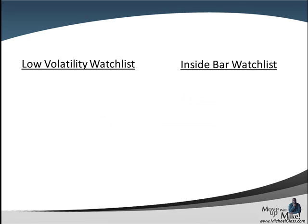As we look at our watch list, we do have a couple of candidates for our low volatility list. We're going to look at the pound dollar, which is not fully there but it's setting up, and the Aussie dollar is there. This is our one-hour timeframe using Bollinger Bands and marking the high and low of the range. For our inside bar watch list, we currently do not have any candidates.